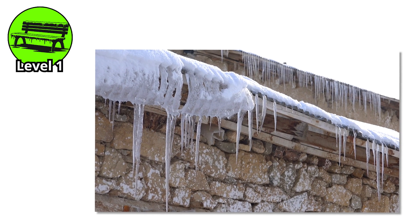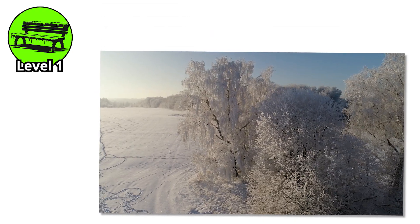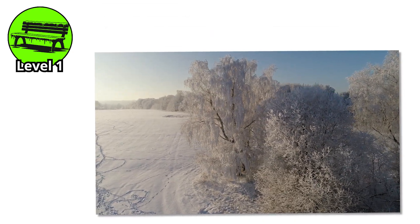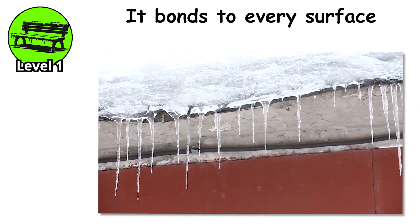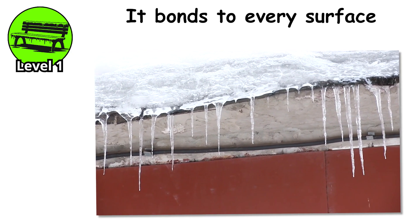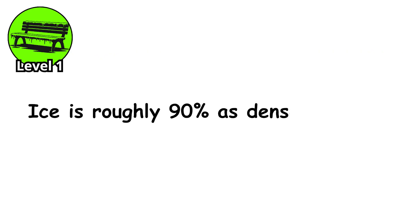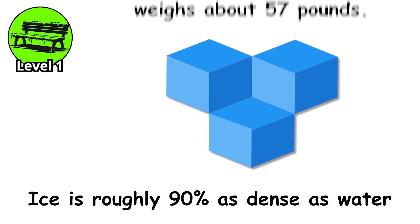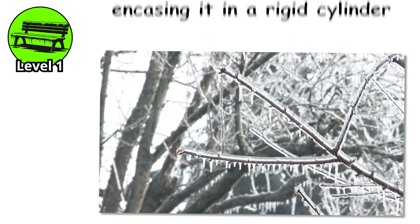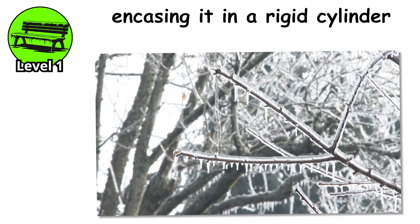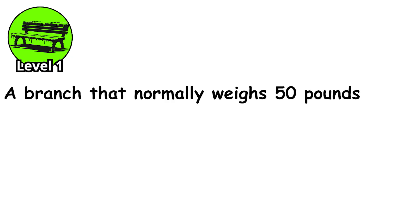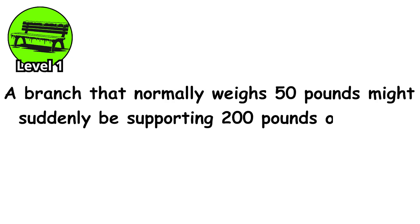That's what's happening to infrastructure right now. And unlike snow, which is airy and can be blown off by wind, ice doesn't go anywhere. It clings, it accumulates, it bonds to every surface with the tenacity of superglue made from winter itself. Ice is roughly 90% as dense as water, which means a cubic foot weighs about 57 pounds. When you coat a tree branch in half an inch of ice, you're encasing it in a rigid cylinder that multiplies the weight exponentially. A branch that normally weighs 50 pounds might suddenly be supporting 200 pounds or more.